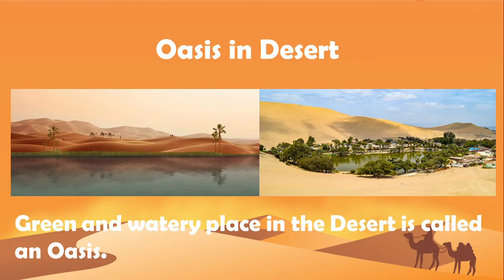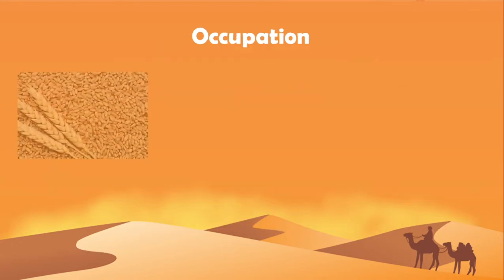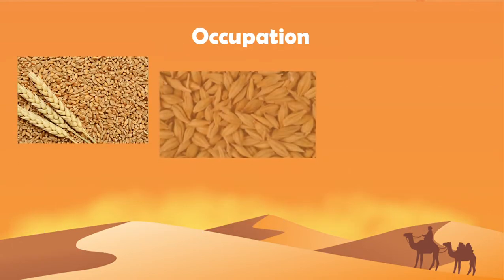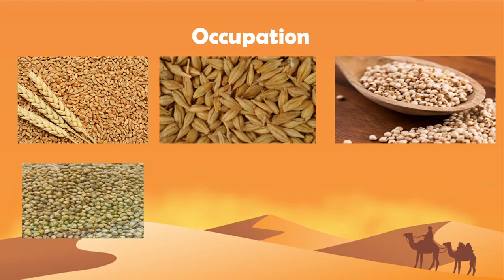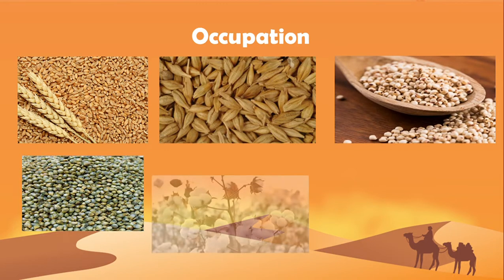Farming is the chief occupation of the people living near oasis. They grow wheat, barley, bajra, jowar, cotton and pulses.